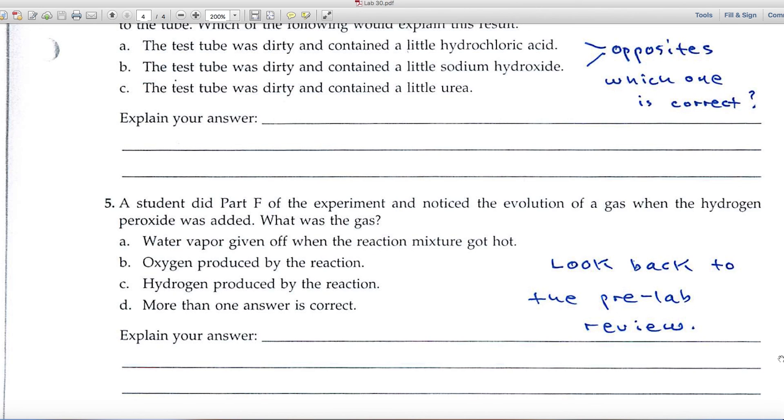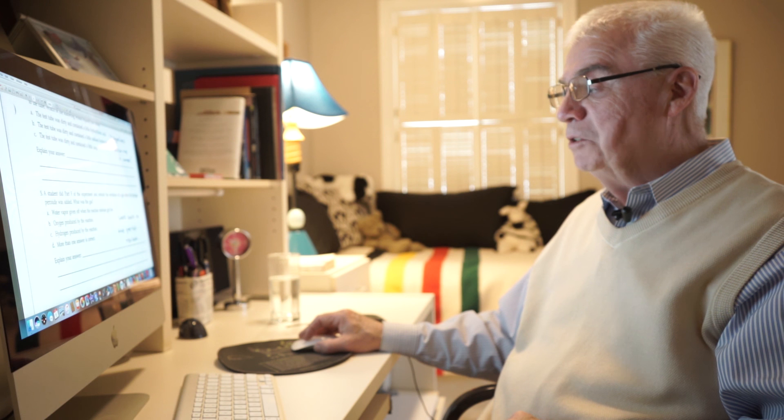Then finally, number five says in Part F, you notice the evolution of a gas. What was the gas? I've mentioned it a time or two; you can go back to the pre-lab review question and the answer is there. So hope you have fun with this experiment, and remember to give me an email or a call if I can be of help.